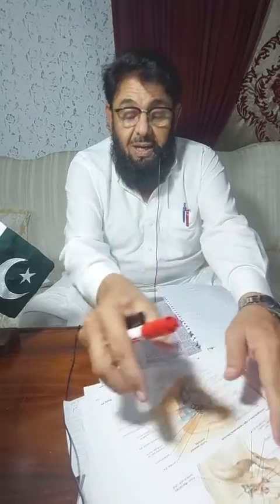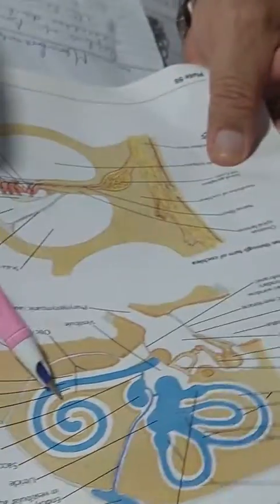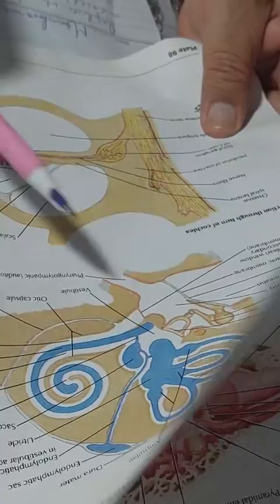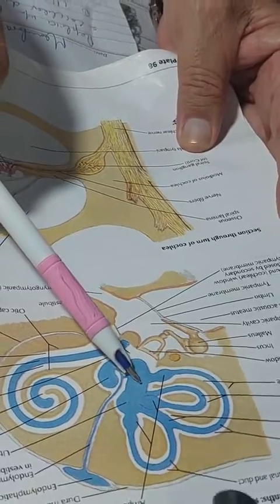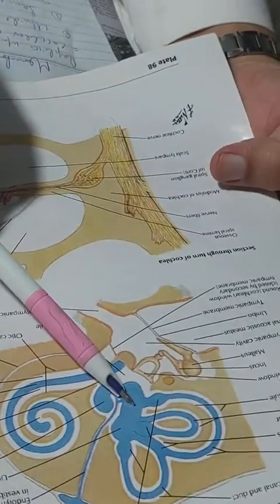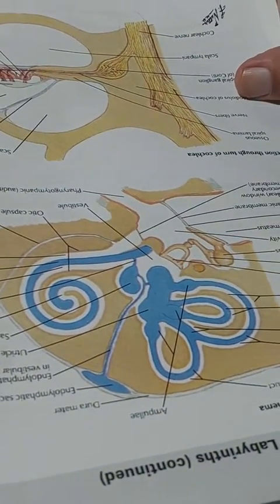Membranous labyrinth is the replica of the bony labyrinth. That's why it consists of the cochlear duct contained inside the bony cochlea, the saccule and the utricle contained inside the vestibule, and the semicircular duct contained inside the semicircular canals.